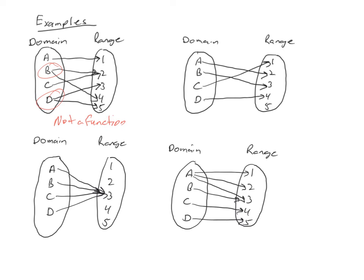Now in this second example, A is assigned two, B is assigned three, C is assigned one, and D is assigned four. I notice there's just one arrow coming from each element of the domain, and therefore this one is a function.